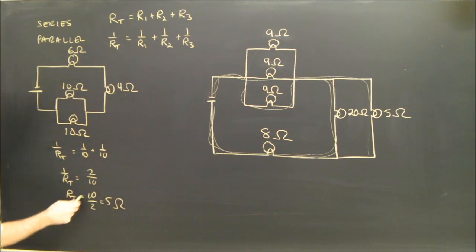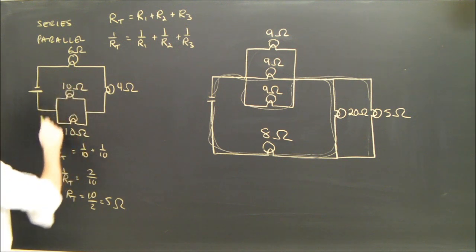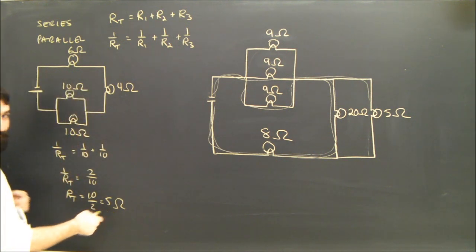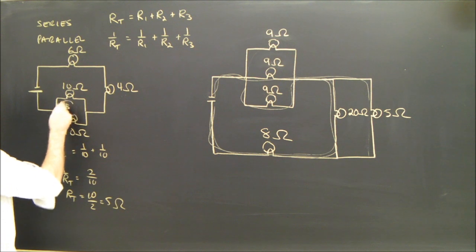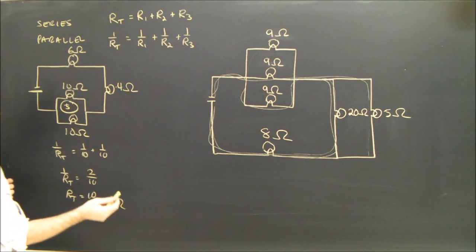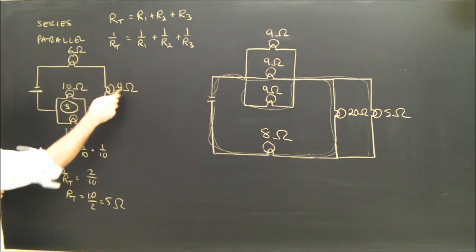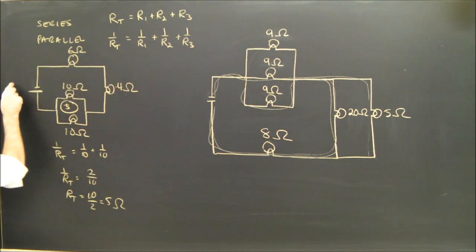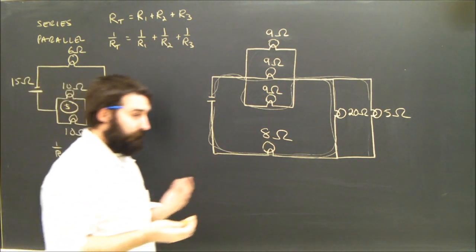So the total or equivalent resistance for here is 5 ohms. Now, this guy is connected in series with this guy and this guy, so the total resistance for the whole circuit is 6 plus 4 plus 5, which is simply 15 ohms. No problem.